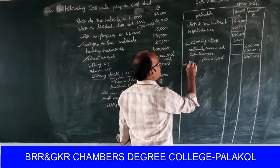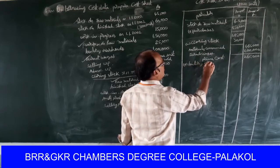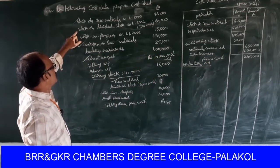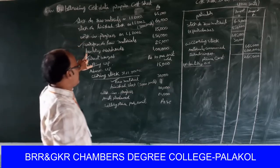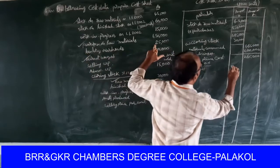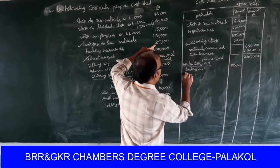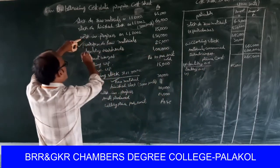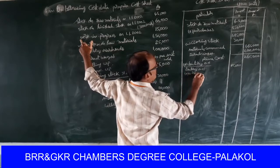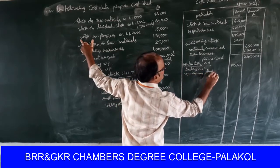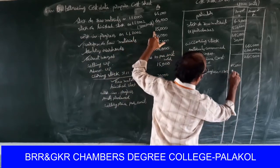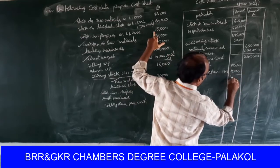Add factory overheads: twenty-five thousand rupees. Opening stock of work in progress as on 1/1/2002: fifteen thousand rupees. Twenty-five thousand plus fifteen thousand equals forty thousand.